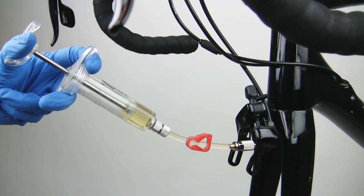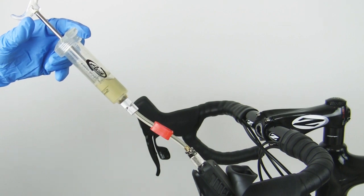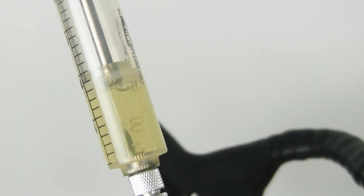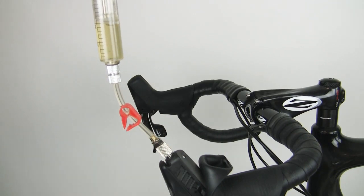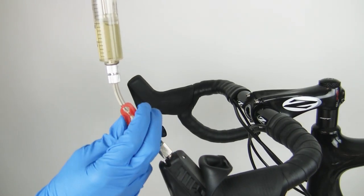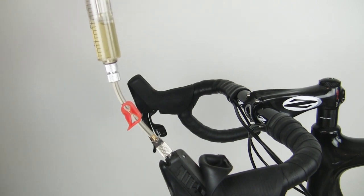Push on the caliper syringe plunger to move fluid into the lever syringe until it is half full. You should also see air bubbles fill the lever syringe. Close the clamp on the lever syringe. If the fluid in the lever syringe is severely discolored, replace the fluid in the lever syringe before continuing.